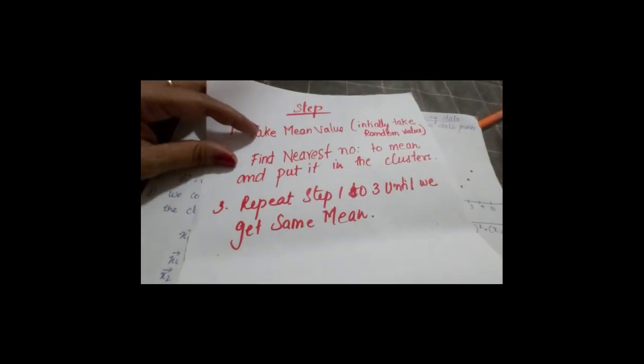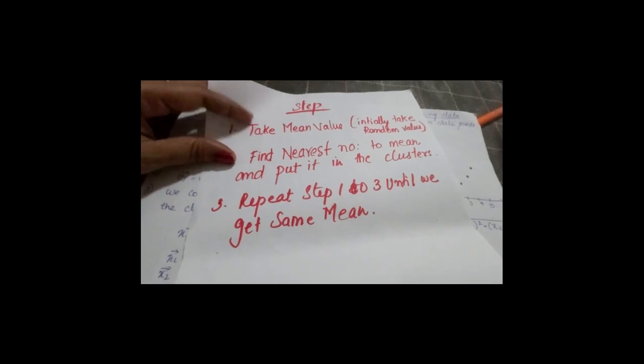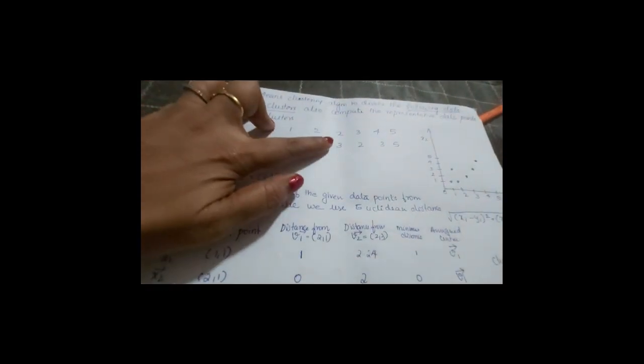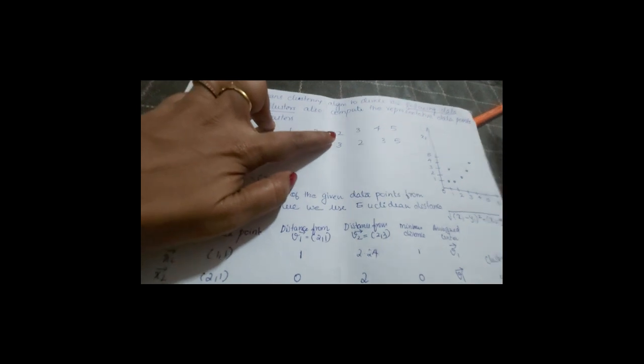The first step is to take the mean value, but at first we don't have any mean value. So we will arbitrarily choose two values. I am arbitrarily choosing v1 as (2,1) and v2 as (2,3).